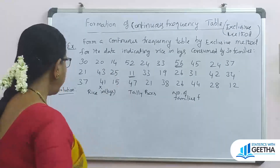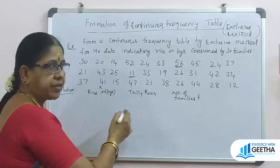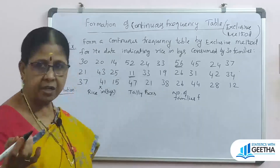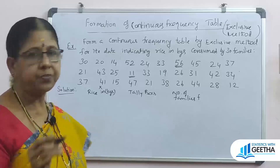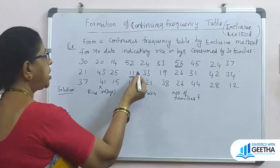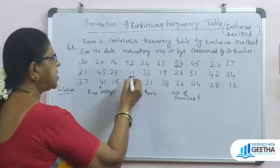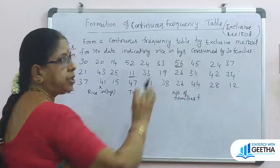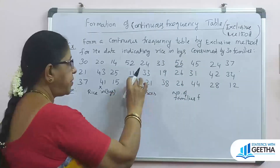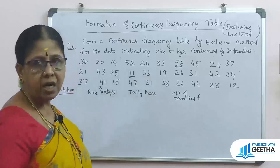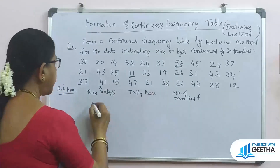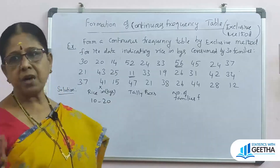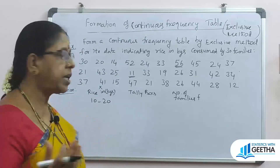Now we are going to continue with the class intervals — that is very important. Let's look at the minimum variable value and the highest variable value. The minimum is 11 and the highest value is 56. So we start with 10.